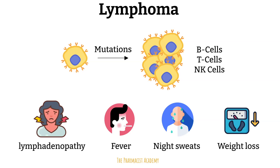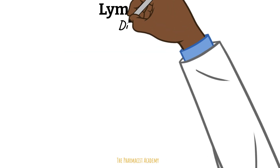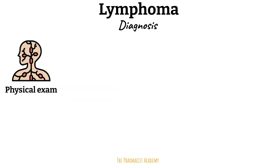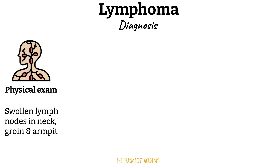Because these symptoms are non-specific and can present in other conditions, diagnosis requires a systematic approach. A medical history and physical exam is done, where the doctor checks for swollen lymph nodes in the neck, armpit, and groin, and may also check if the spleen is enlarged, since an excess of lymphocytes causes lymphoid tissues and organs to become enlarged. A blood test is done — it may appear normal because lymphoma occurs within the lymphatic system, usually in the lymph nodes, not the blood.